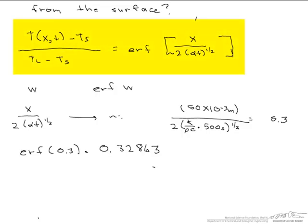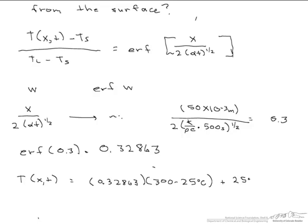Now all we have to do is put that back into our original equation. So T of X and T equals 0.32863 times our Ti minus T surface, 300 minus 25 degrees C, plus our temperature at the surface, 25 degrees C, and that equals 115.4 degrees C.